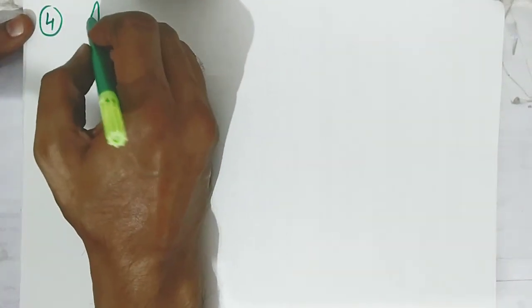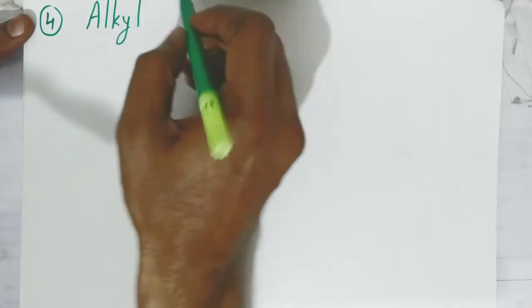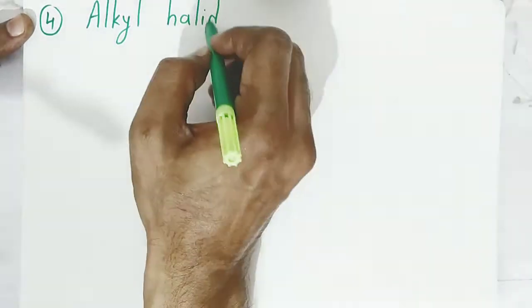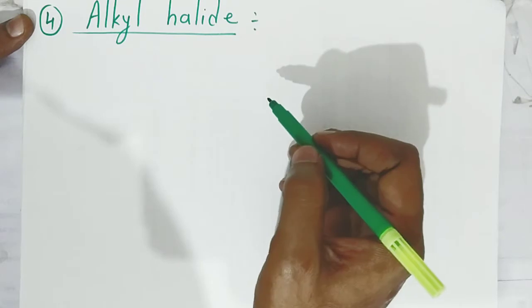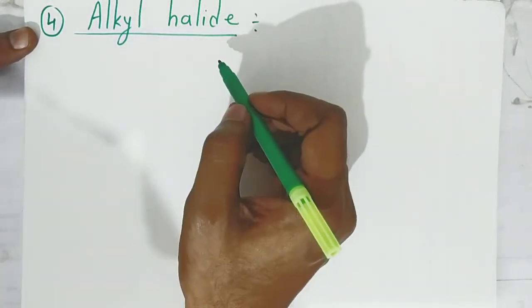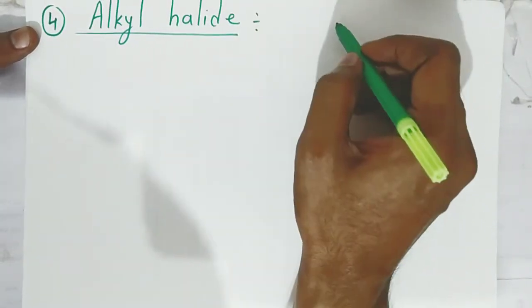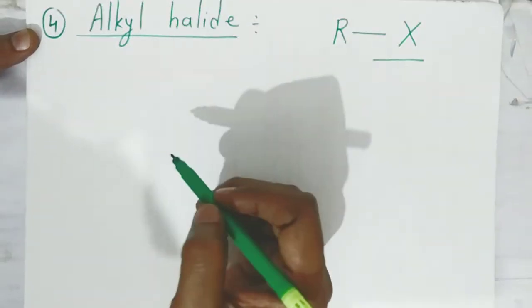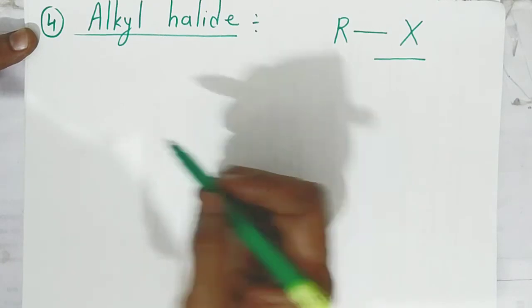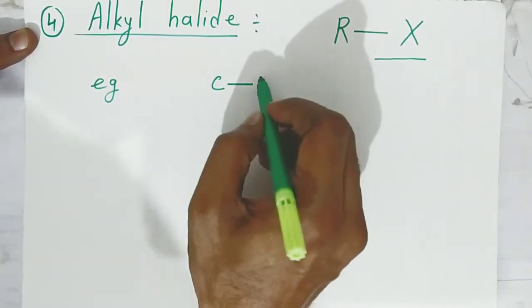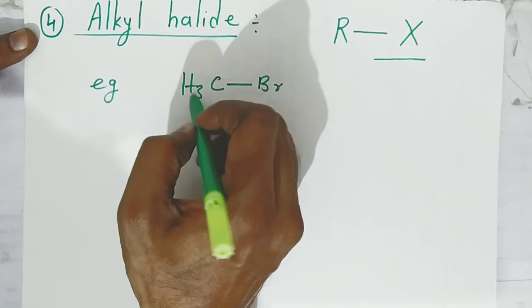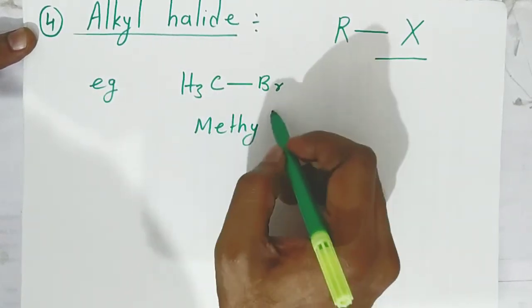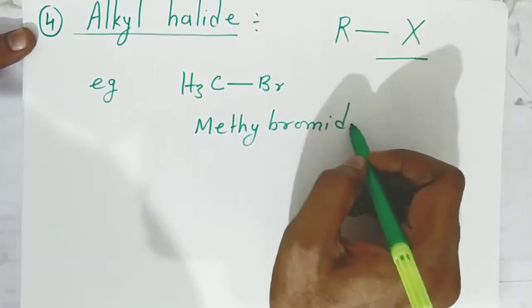The fourth functional group is alkyl halide. In alkyl halide, the hydrogen of the alkane is replaced by a halide group. So this is called alkyl halide. A simple example is methyl bromide; similarly, you can write ethyl bromide or propyl bromide.